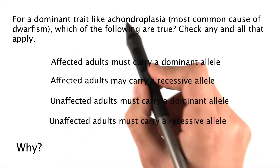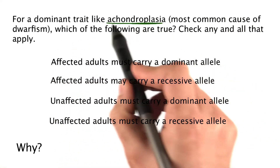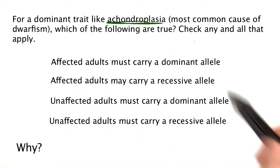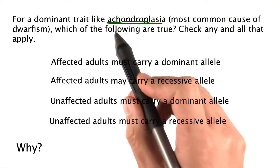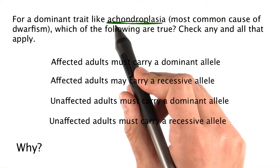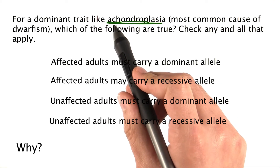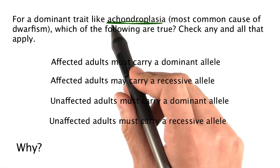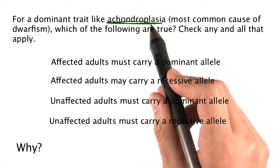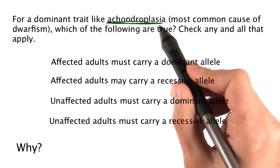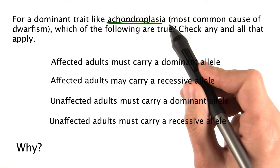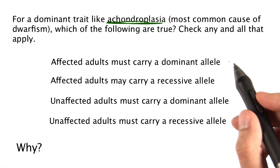For a dominant trait like achondroplasia, which of the following are true? Remember, achondroplasia is dominant. So in the heterozygous condition, you'll have achondroplasia. In the homozygous condition, it's actually lethal.